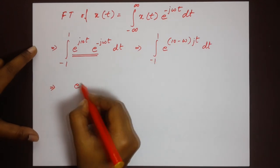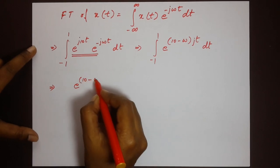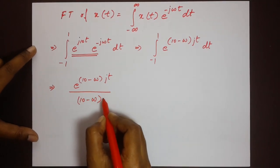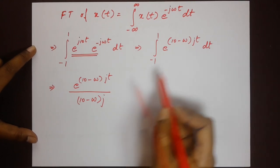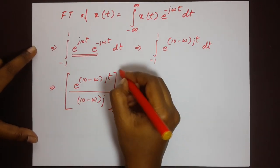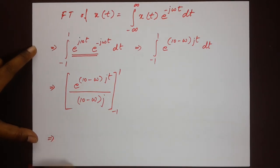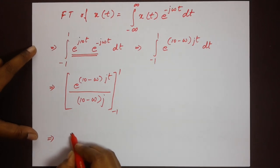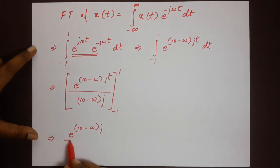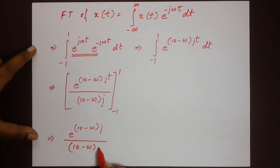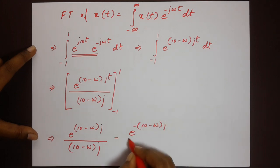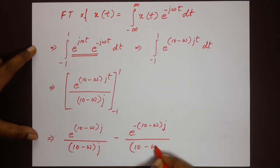Integrating e^(j(10−ω)t) with respect to t gives e^(j(10−ω)t) / [j(10−ω)], evaluated from −1 to 1. Plugging in the limits, we get: e^(j(10−ω)) / [j(10−ω)] minus e^(−j(10−ω)) / [j(10−ω)].